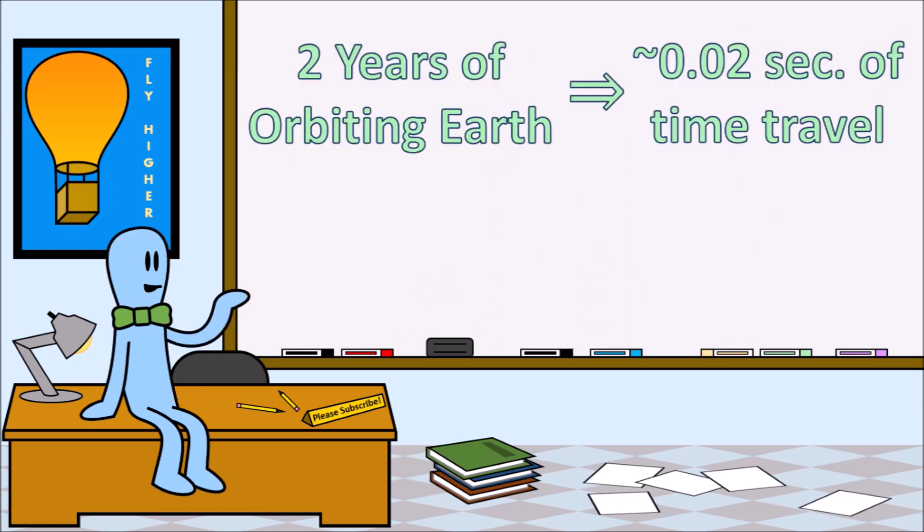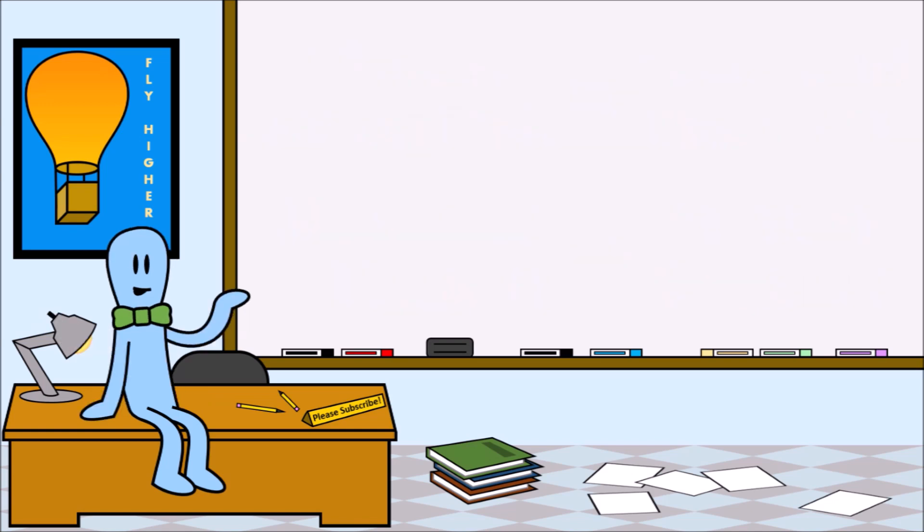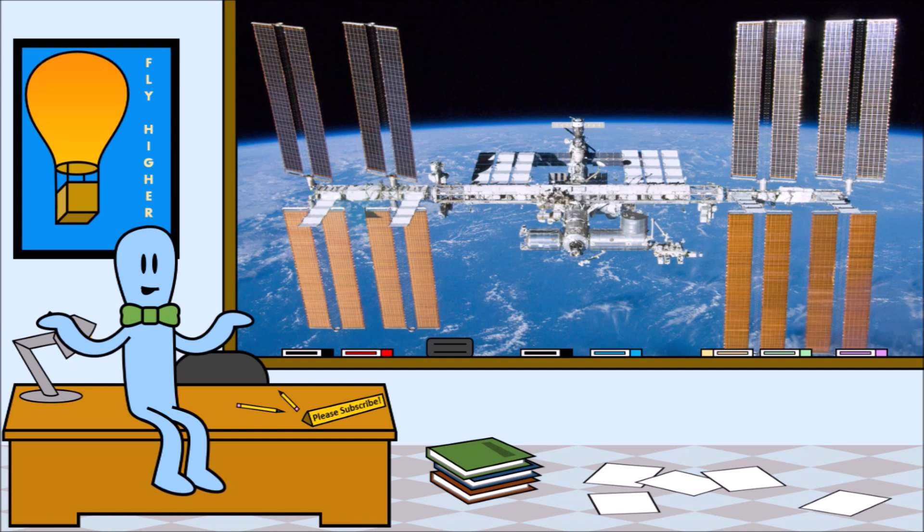Over two years in space for two hundredths of a second. At that rate, it would take about 100 years of orbiting around the world in space to travel about one second into the future. So I guess we did it. We already invented the time machine, and it's the International Space Station. It's not a very fast time machine, but it still works. So now that we have this, let's upgrade our time machine.